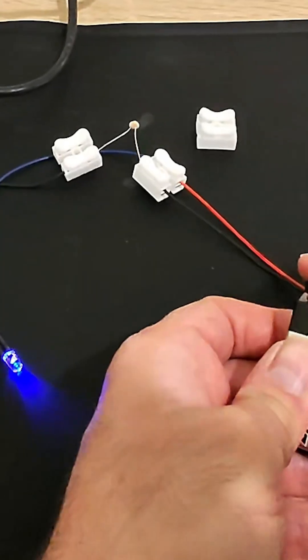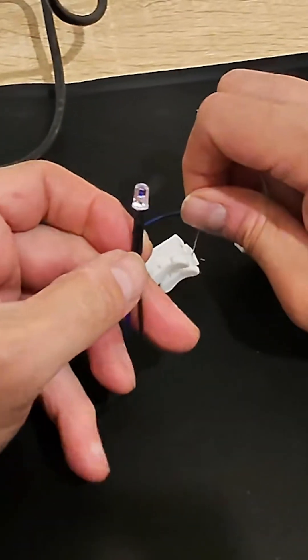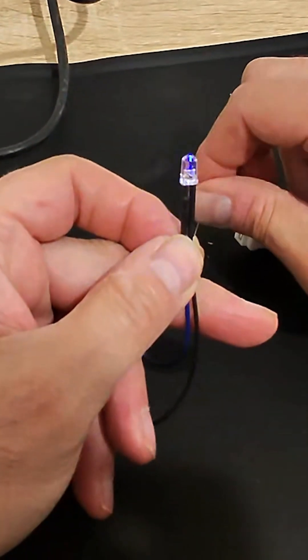And as you can see, once we connect the battery the LED lights up, and if we cover up the photoresistor the light dims.